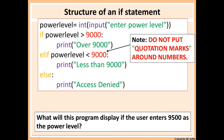Now here we have another example with numbers. It's exactly the same structure — we have if, we have elif, and we have else, but you don't always need elif or else; it depends on the question or what you're coding. Here, if the power level is over 9000 then we want to display 'over 9000'. So if the user enters 9500, since 9500 is greater than 9000 it will display the first part which is 'over 9000', and the program will stop.